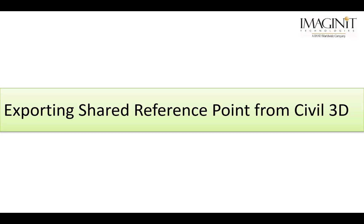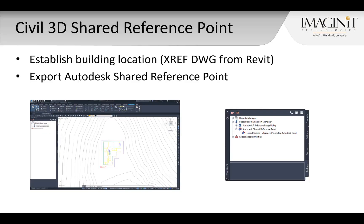The first step in the process is to export a shared coordinate XML file from Civil 3D. I've placed my Revit model on site using an xref that was exported from Revit. I also have a Civil 3D point in the drawing that I can snap to as my designated point of reference, which corresponds to a location that I can easily identify in the Revit model.